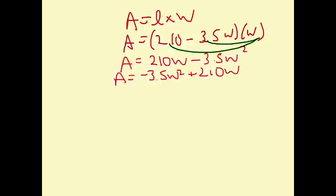So now I'm ready to complete the square. So again, remember, we're going to factor out whatever number is in front of our variable squared, which is a negative 3.5. So negative 3.5 divided by negative 3.5 is W squared. 210 divided by negative 3.5 is negative 60W.